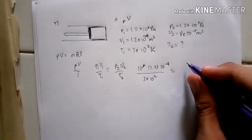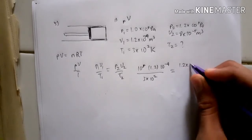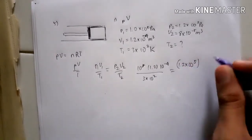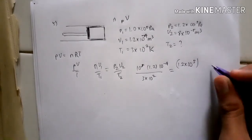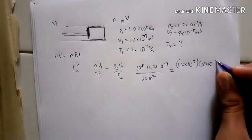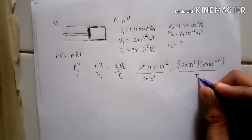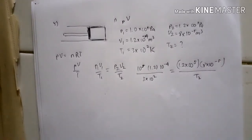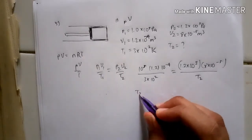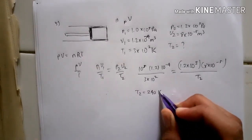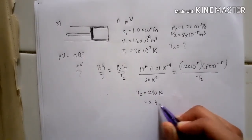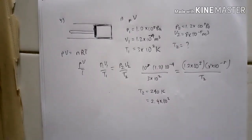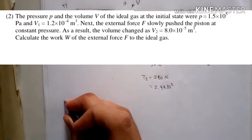P2 is 1.2 times 10 to the power of 5 and V2 is 1.2 times 10 to the power of minus 5. Calculating carefully, we get T2 equals 240 Kelvin, or 2.4 times 10 to the power of 2 Kelvin.